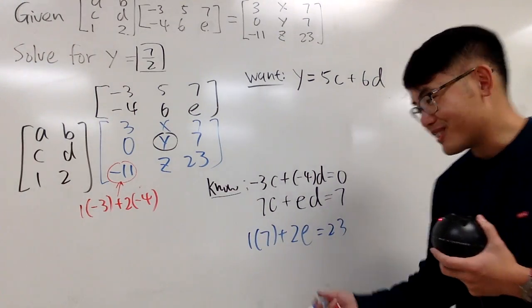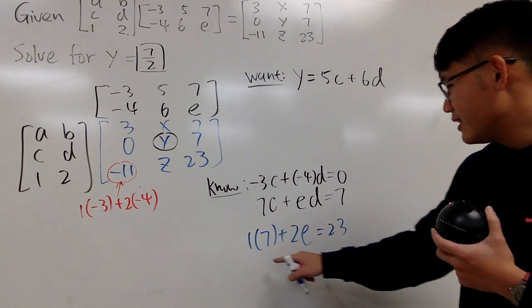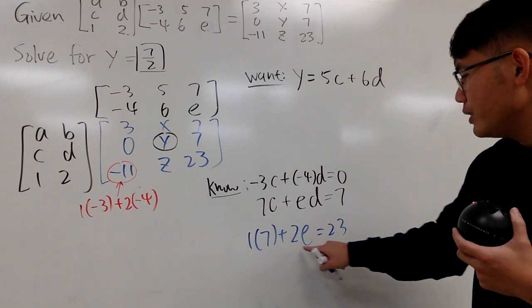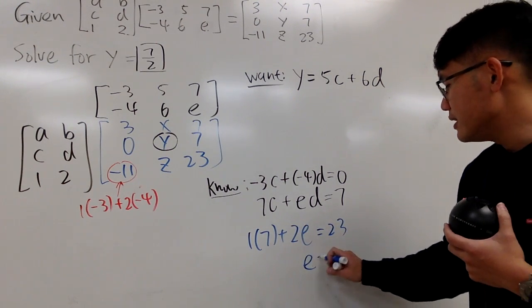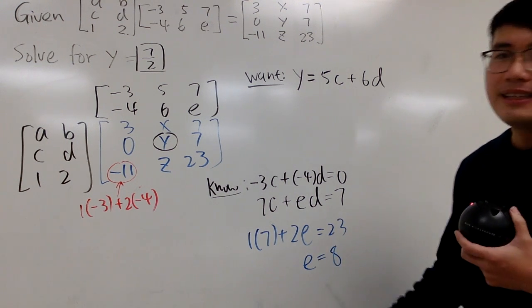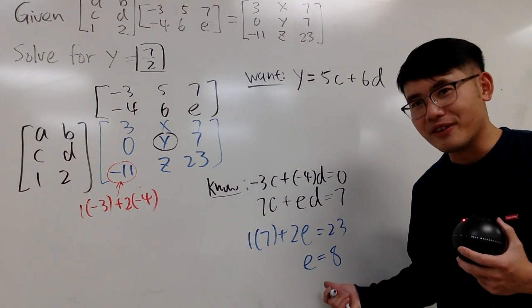This equation is just one variable. That's good. So for e, really nice. Minus 7 on both sides, you get 2e is equal to 16, so e is equal to 8. Yes, I'm telling you guys, e is equal to 8 for the first time.